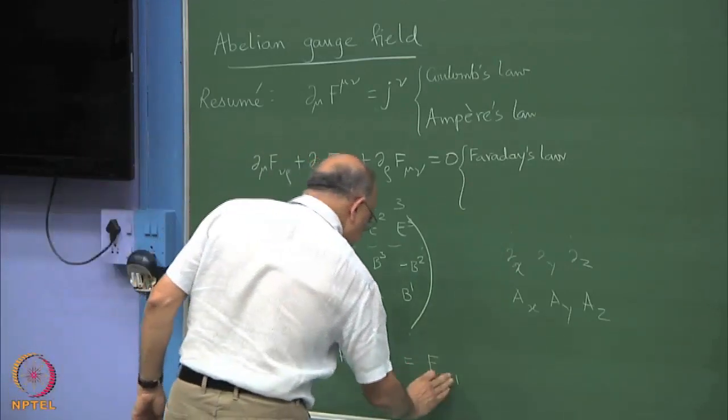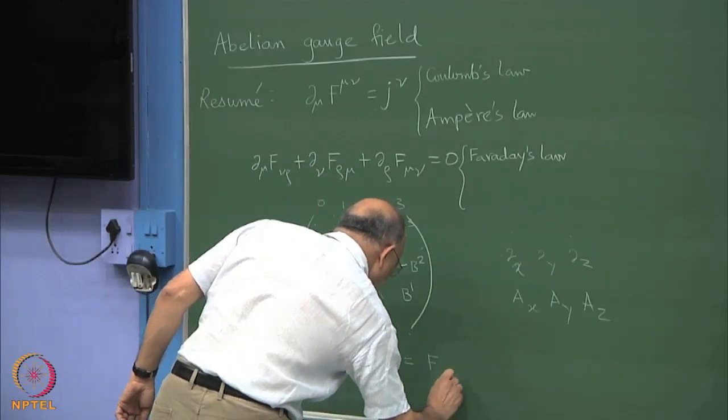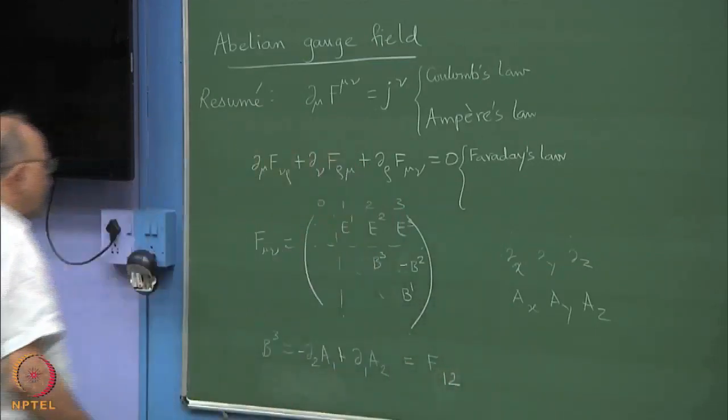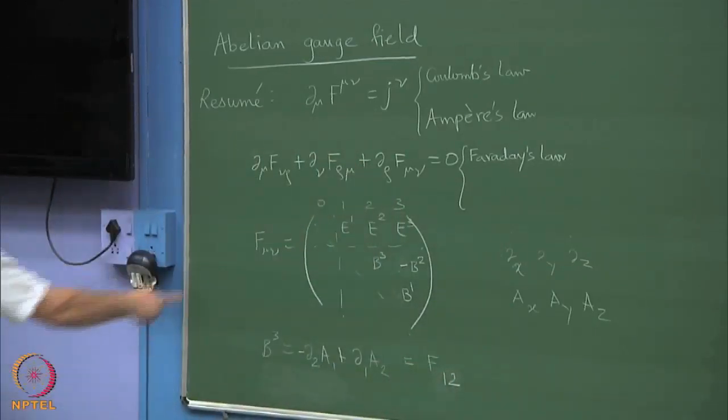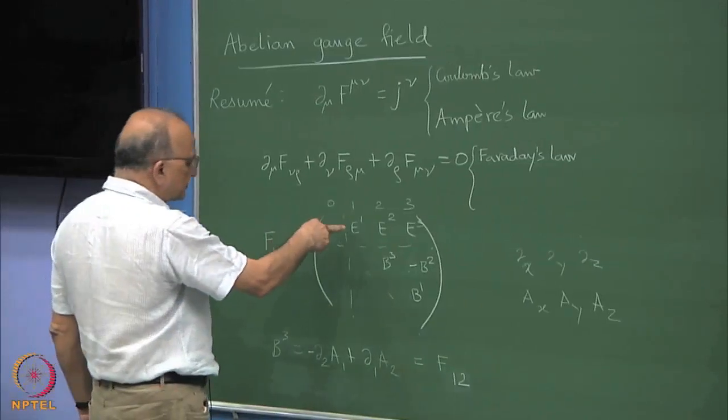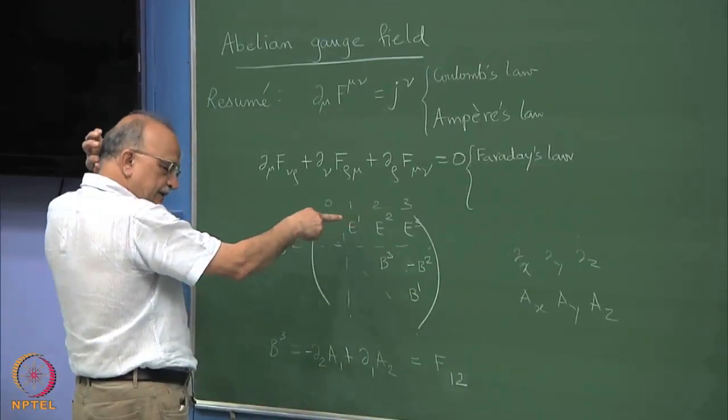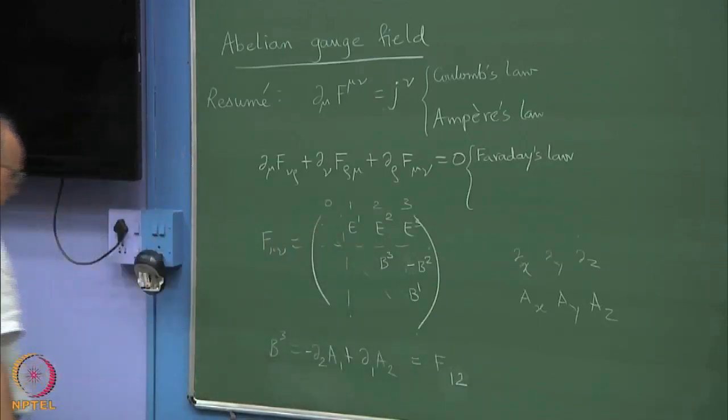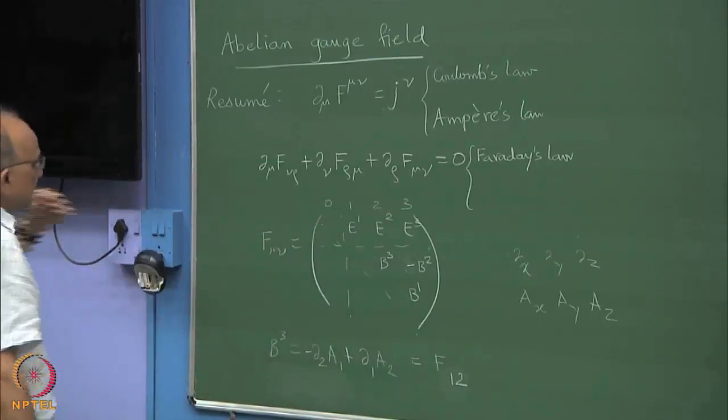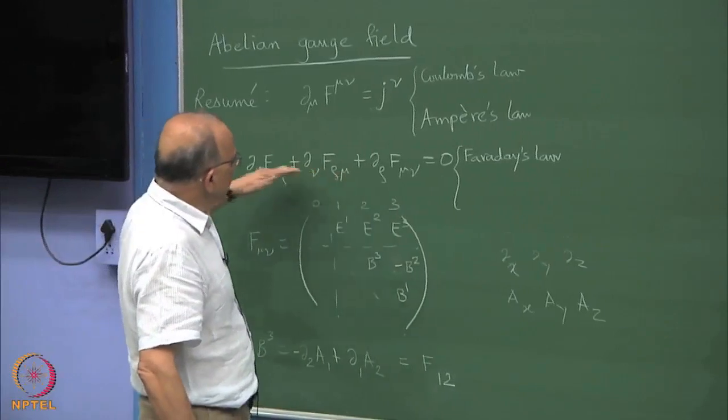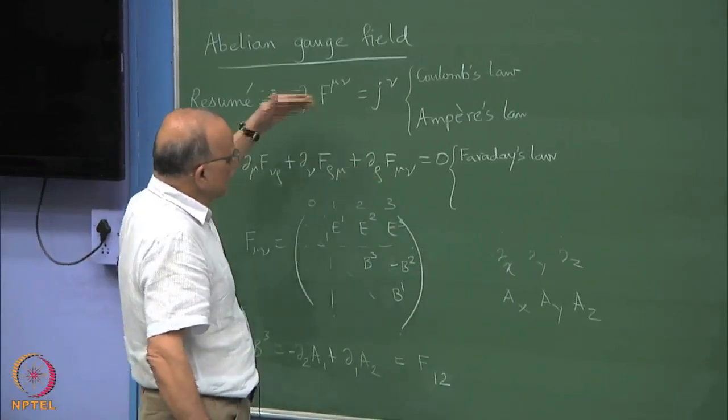This equals D_0 A_1 minus D_1 A_0, etc. These laws reproduce the field tensor structure.